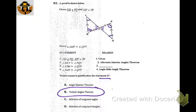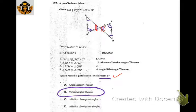We start marking everything up, and the question asks what can justify statement three. Statement three shows angle LTM and angle QTP — those are just vertical angles, so they're congruent.